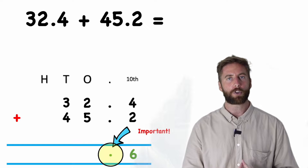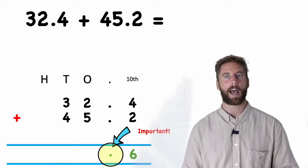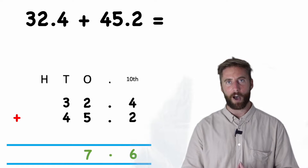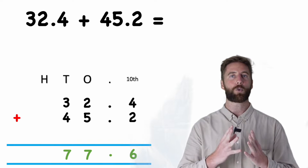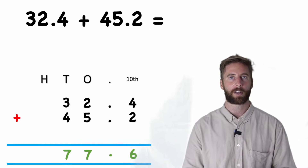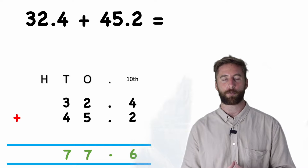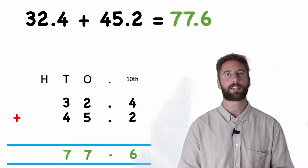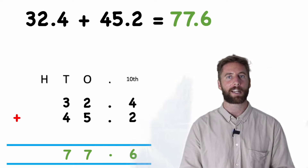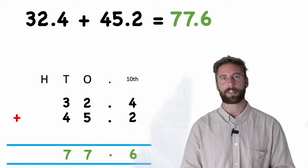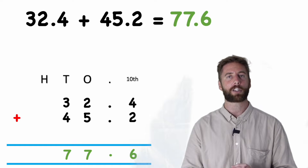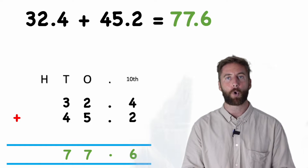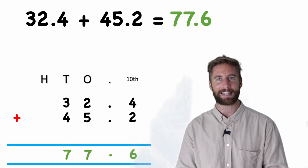Now I'm ready to add up my ones column. I have two ones added to five ones equals seven ones. Now I can do my tens column. Three tens plus four tens is seven tens. So therefore my answer is seventy-seven point six.